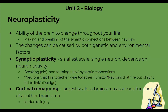Next we have cortical remapping, which is the largest scale of neuroplasticity. This is when a brain area assumes the function of another brain area — so brain X takes brain Y's function.